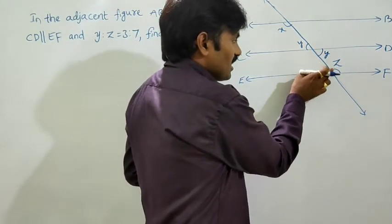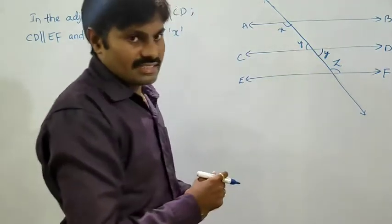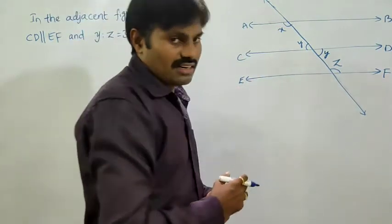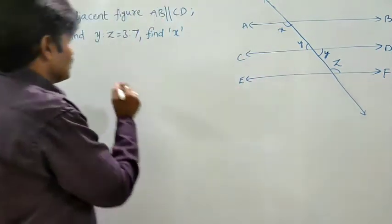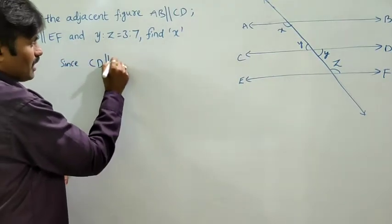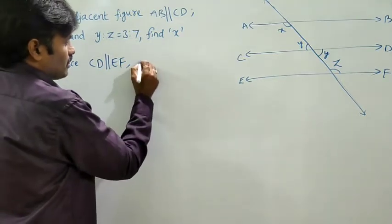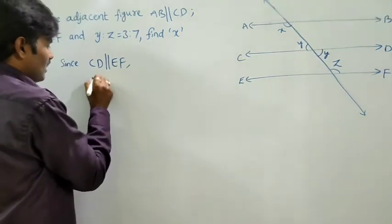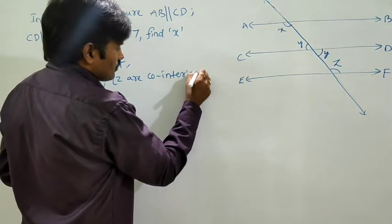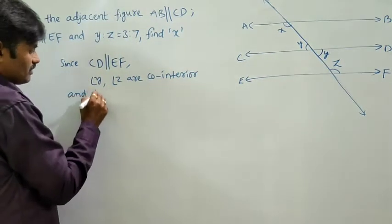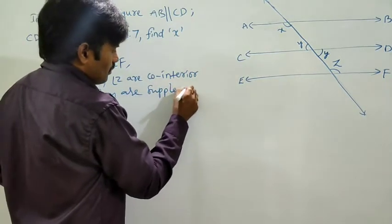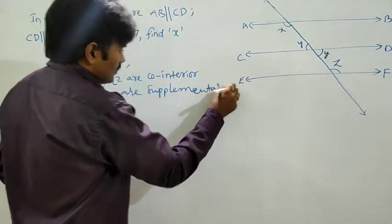And what is the nature of Y and Z angles here? Both are interior angles. They are not adjacent and they are on the same side of transversal. So such type of angles are called co-interior angles. Since CD and EF are parallel to each other, then angle Y and Z are co-interior angles and they are supplementary.